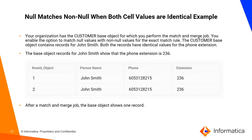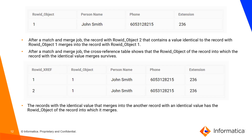Now let's take another example of null match not null when both cells are identical. We are taking customer as a base object with John Smith as a record. We have two records: for row ID object 1 the extension code is 236, and for row ID object 2 the extension code is also 236. After match and merge, the two records got merged and there will be one record in the base object. In the cross-reference table, we can see that the row ID object value of the two records is the same.